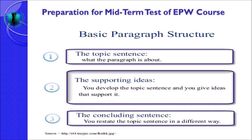Now let's review basic paragraph structure. First one is the topic sentence — topic sentence is what the paragraph is about. Yang kedua, the supporting ideas — you develop the topic sentence and you give ideas that support it. Yang kedua ini juga kita sebut dengan istilah supporting details yang ditulis dalam bentuk supporting sentences seperti yang telah kita bahas di video-video sebelumnya. Yang ketiga terakhir adalah the concluding sentence — you restate the topic sentence in a different way. Topic sentence and concluding sentence are connected to each other in your writing.